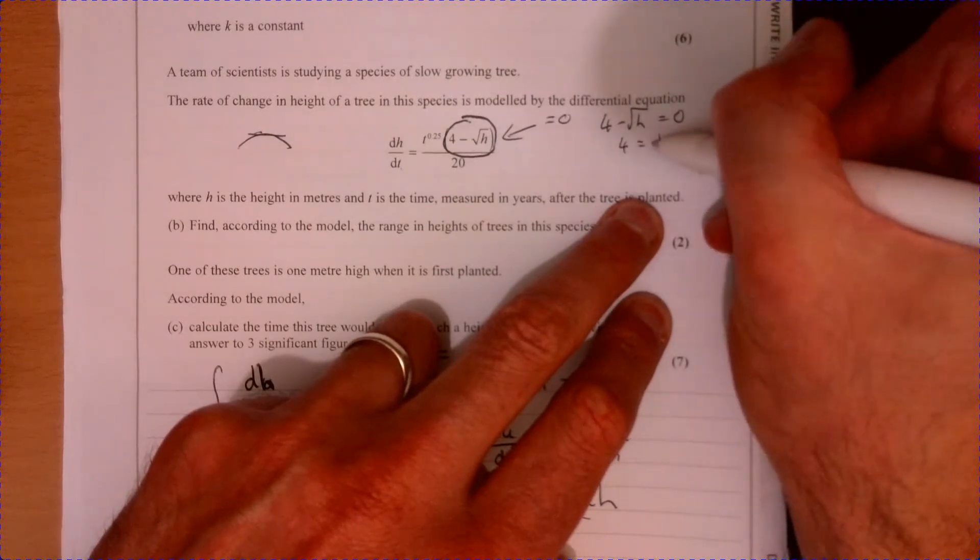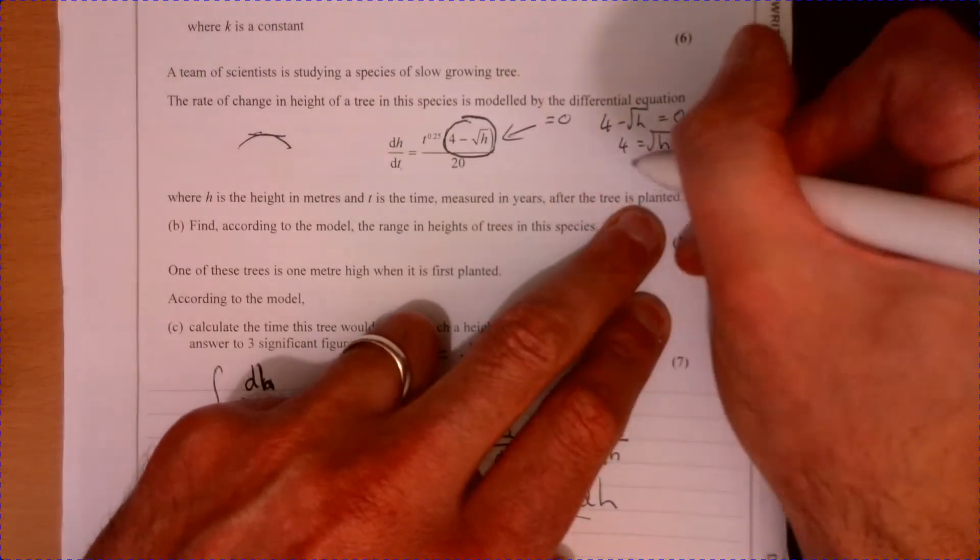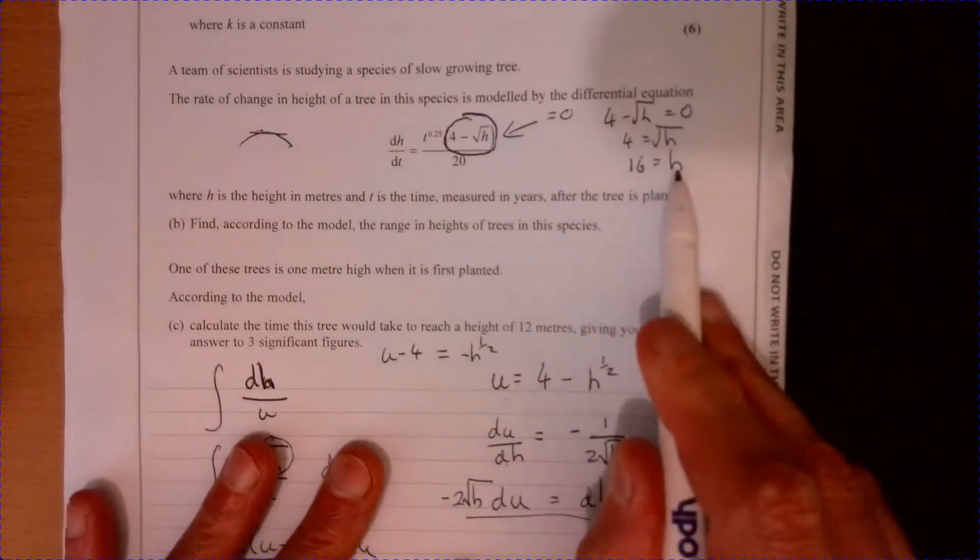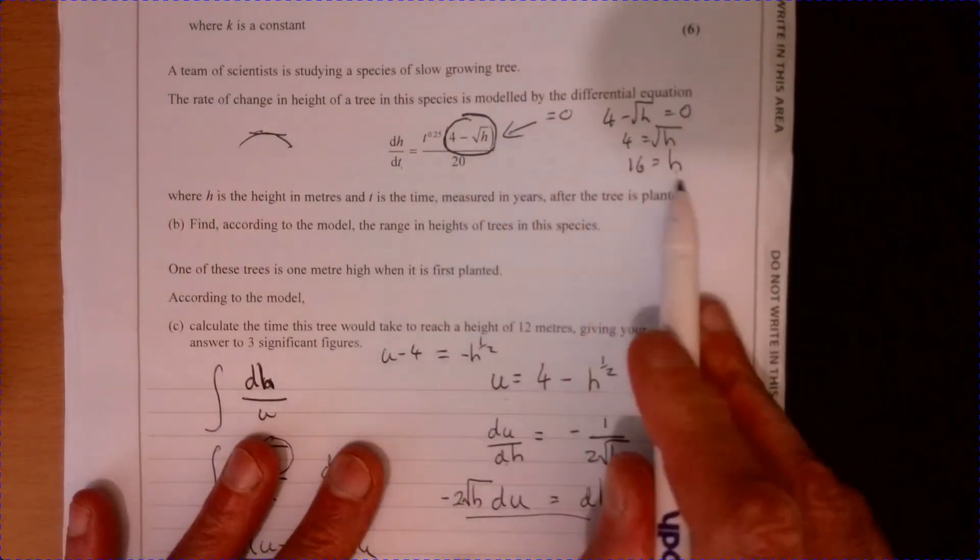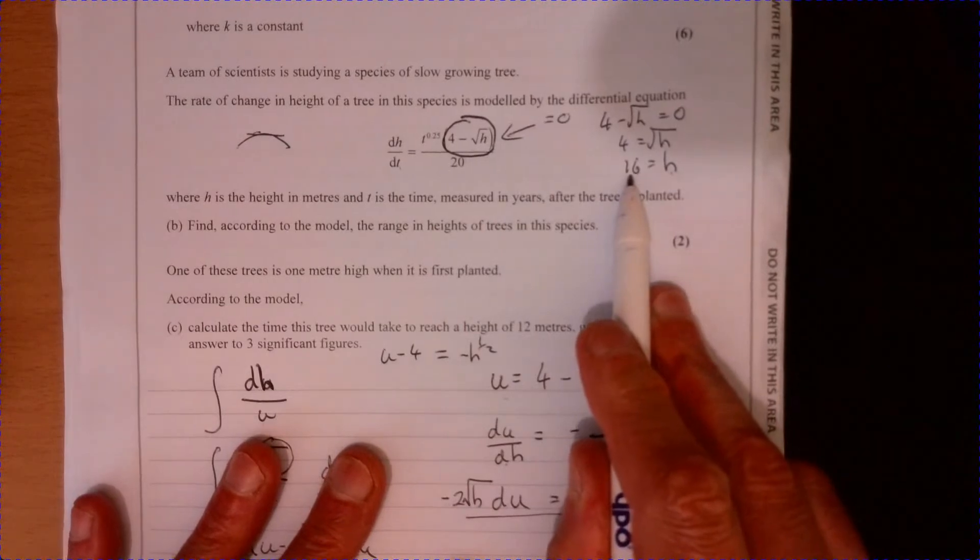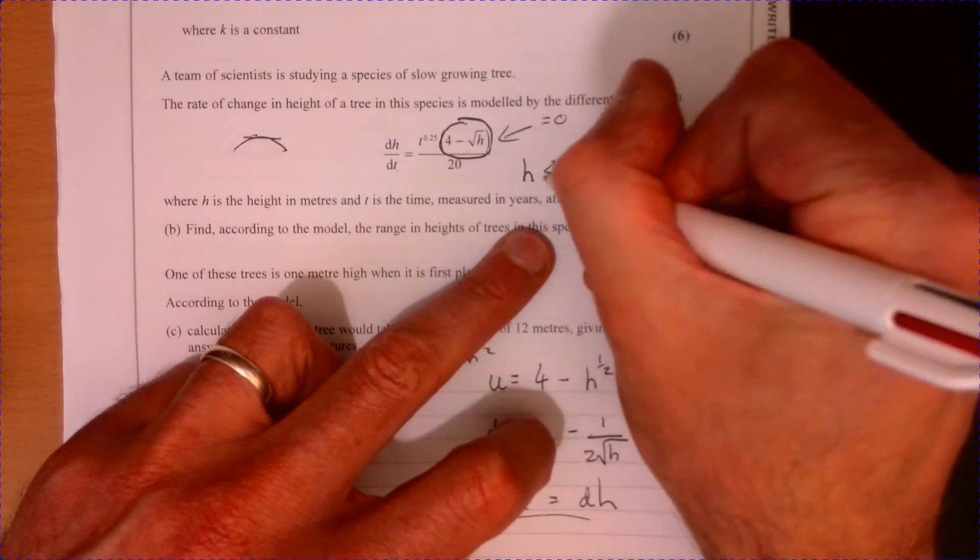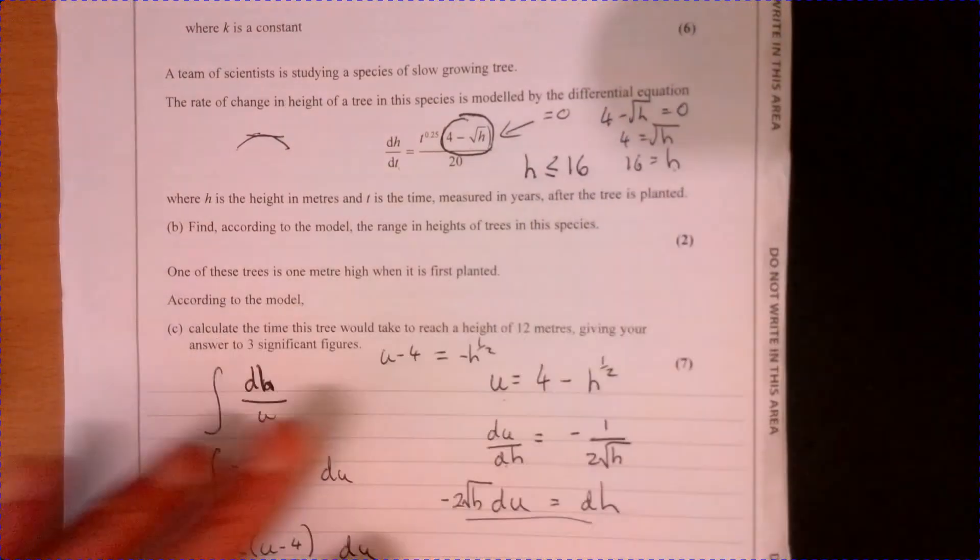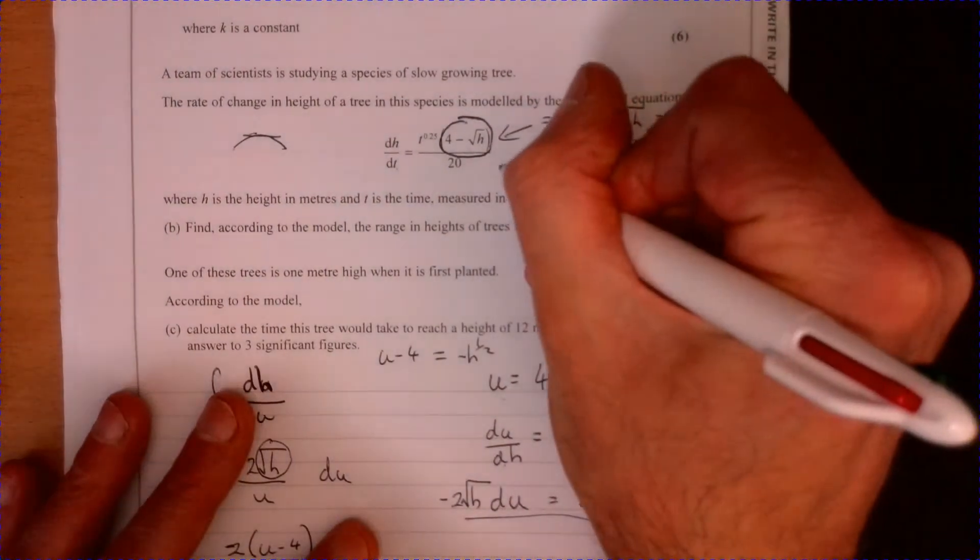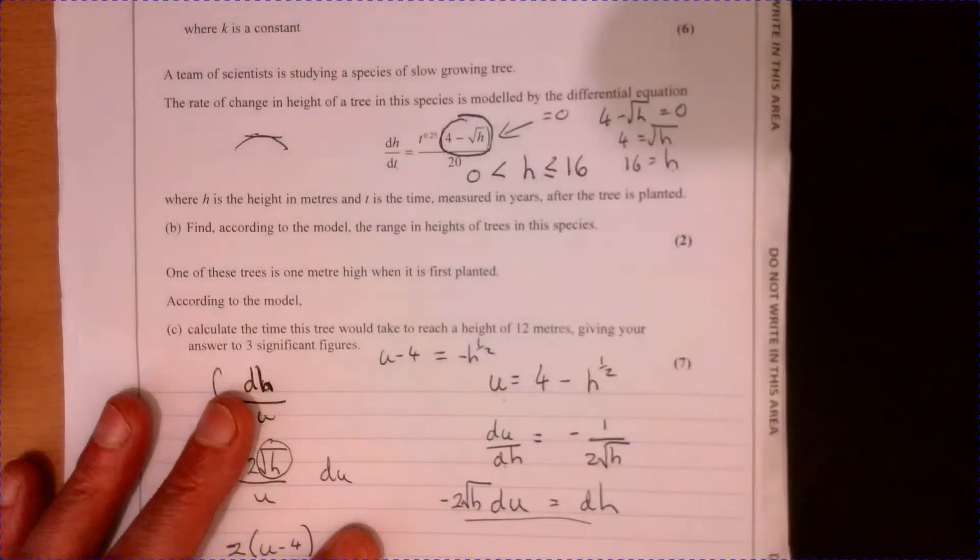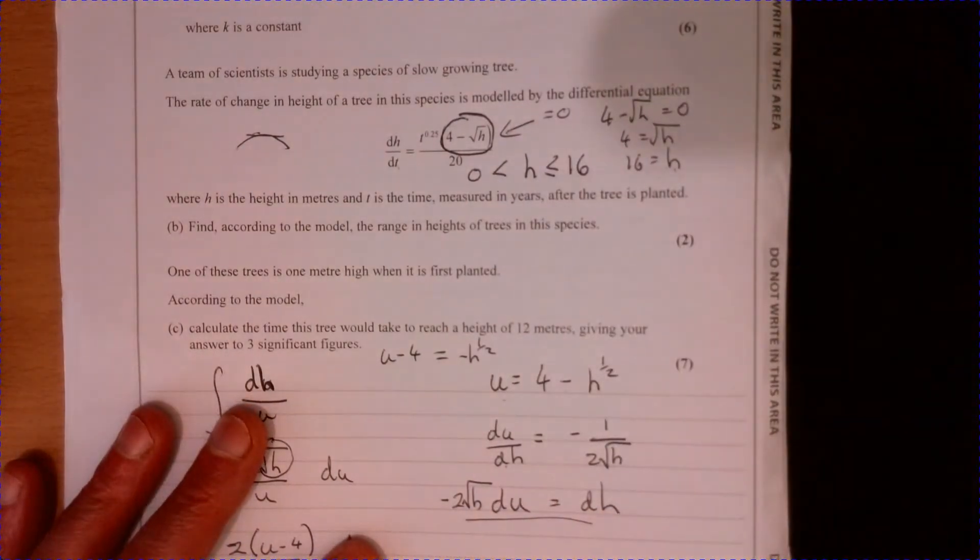So 4 equals root h squared both sides. Therefore, at the turning point, the maximum height is 16. So the range of heights is up to including 16. And at the moment, in terms of what we know, it's going to have to be more than 0 as well.